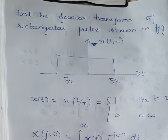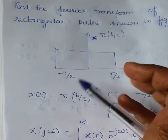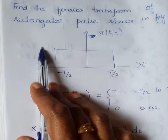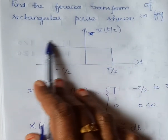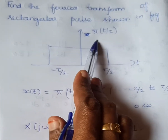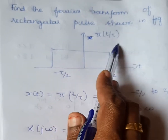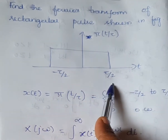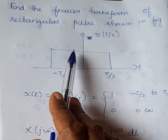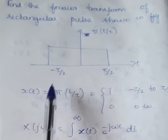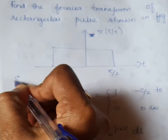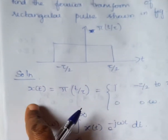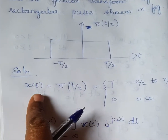The next question is: find the Fourier transform of the rectangular pulse shown in the figure. The rectangular pulse is given as Π(t/τ), which ranges from -τ/2 to τ/2. From this diagram, we want to find the value of x(t).